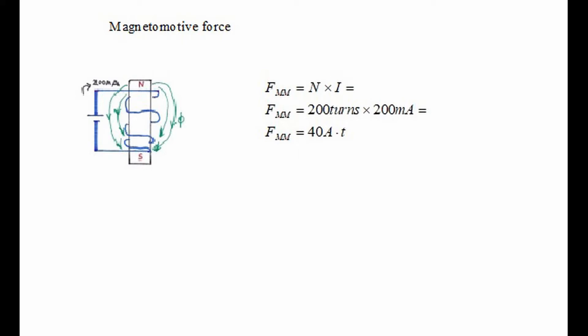The force of the magnetic field is called magnetomotive force and it depends on the number of windings that we wrap around the iron and the amount of current that we feed through the windings. Suppose we have 200 turns of wire around the iron and a DC current of 200 milliamps, then the magnetomotive force is 200 turns times 200 milliamps which equals 40 amp turns.